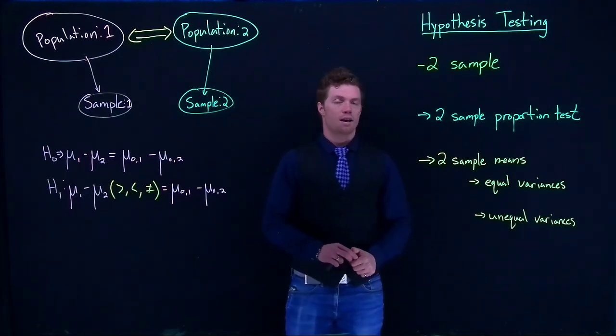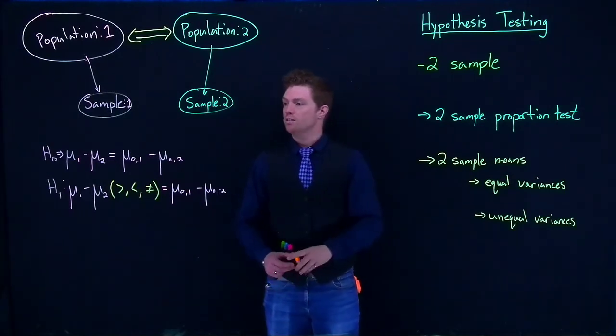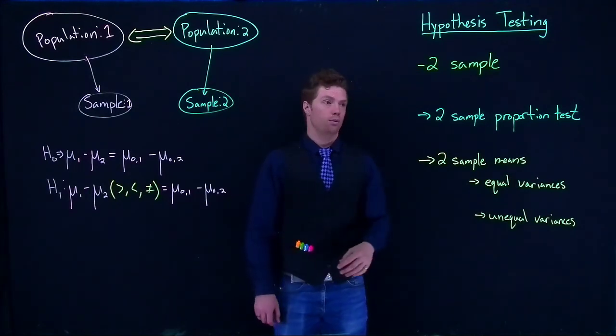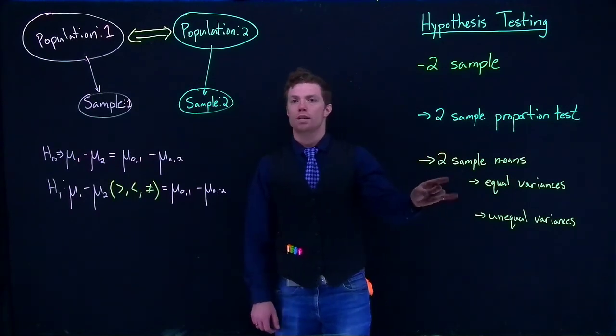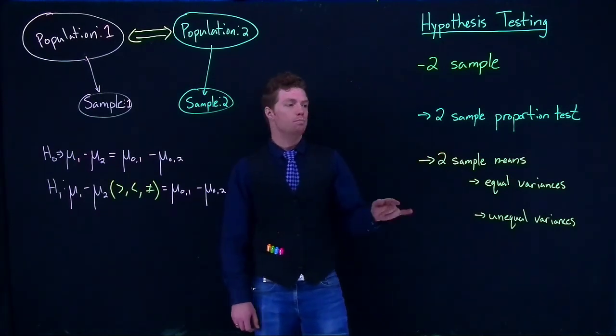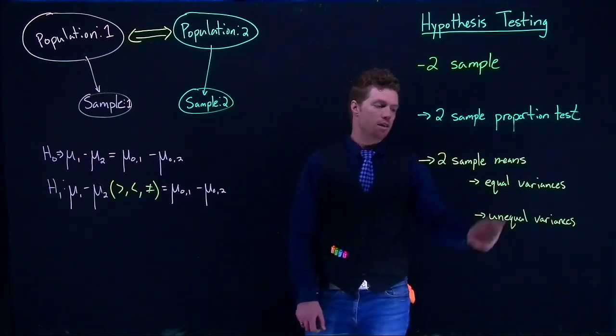For our class, we have three tests we're working with: two-sample proportions, and two-sample means. The two-sample means are broken down into two methods - one where they have equal variances and one where they have unequal variances.